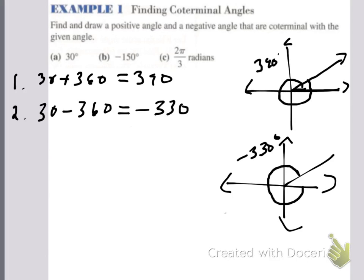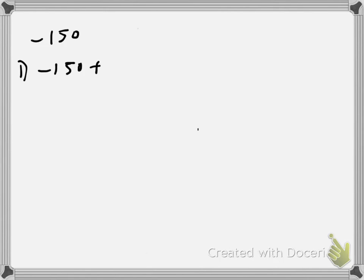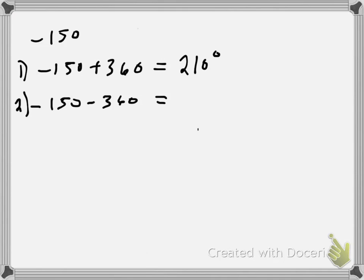Now let's do part B — negative 150 degrees. For the positive coterminal angle, we do negative 150 plus 360, and when we add those we get 210 degrees. That's the positive coterminal angle. For the negative coterminal angle, we do negative 150 minus 360 degrees, and that gives us negative 510 degrees.